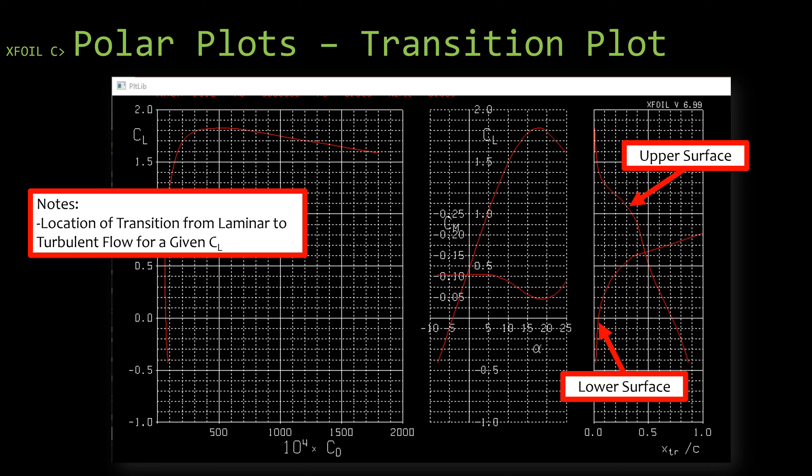And as you can see there, it is the transition point normalized by the chord. So this is just telling you where on the chord it transitions. So 20%, 30%, 60%. Now it has both the upper surface and the lower surface. If you look towards the left of the plot, the upper surface is always going to be on top. The lower surface is going to be on the bottom.